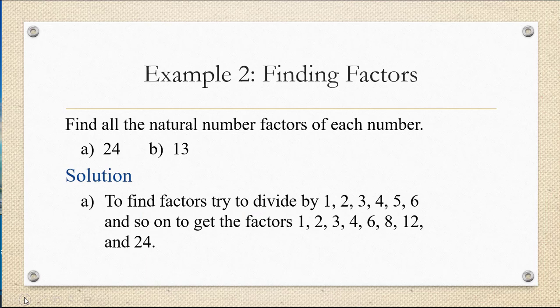Now for part b you're going to find that only the number 1 and 13 go in evenly. 2, 3, 4, 5, 6, and so on do not divide into 13. So the only factors of 13 are 1 and 13.